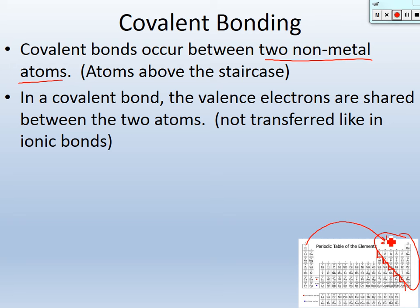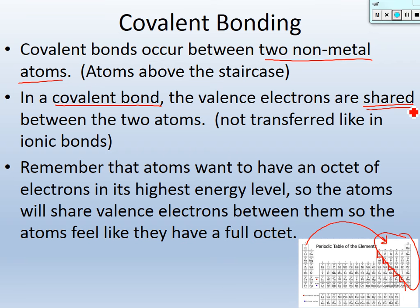In a covalent bond, the valence electrons are shared between the two atoms. That's the main difference between ionic and covalent bonding — in ionic bonds, one atom totally transfers its electron to the other, but in covalent bonds the two atoms share their valence electrons. Atoms want to have an octet — eight electrons in the highest energy level. They share valence electrons so that each atom feels like it has a full octet.